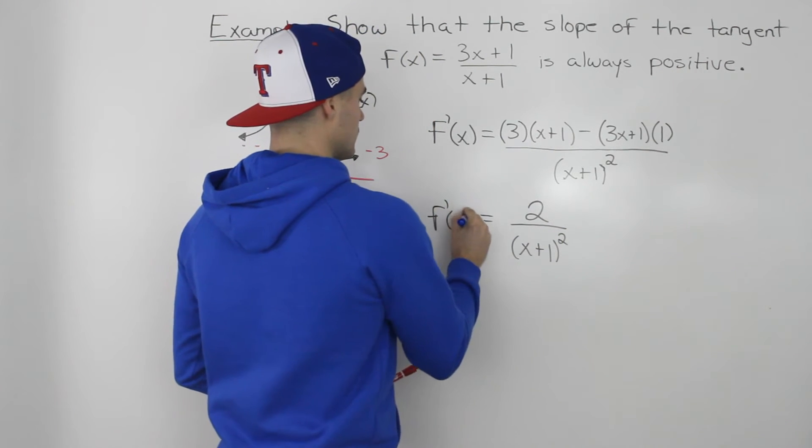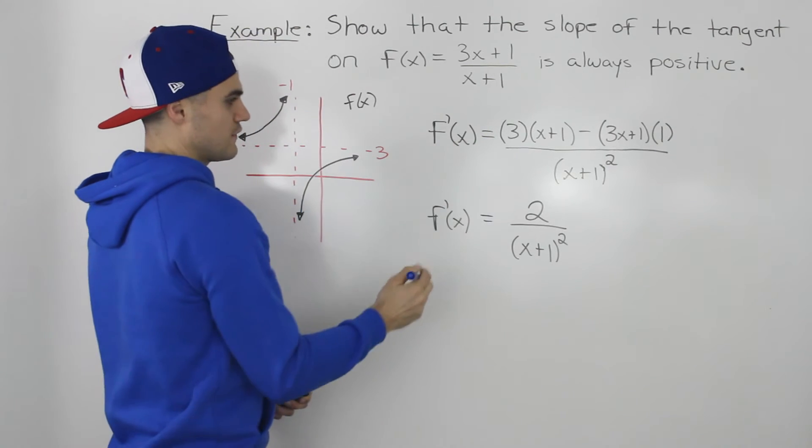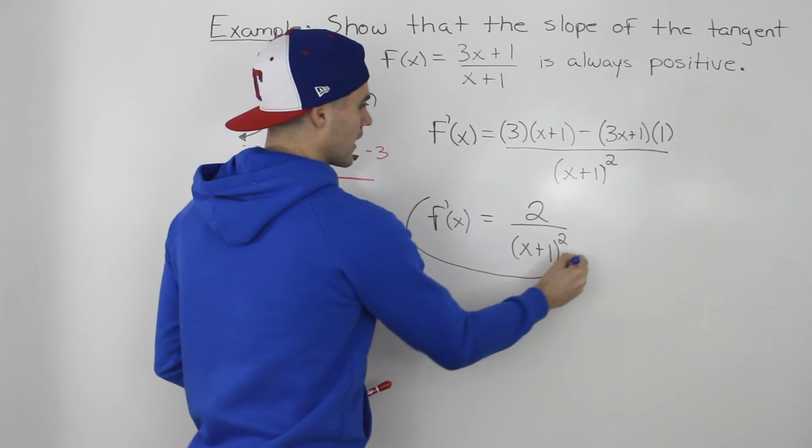So that is the derivative of this function, simplified, 2 over (x+1) squared.